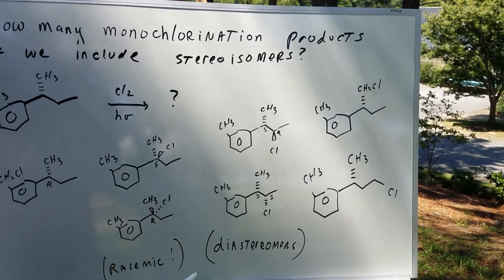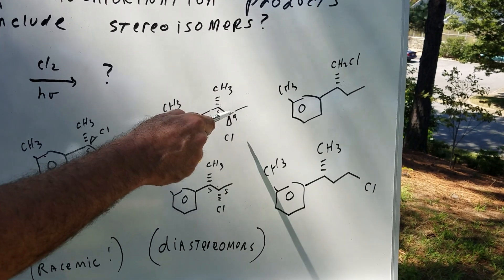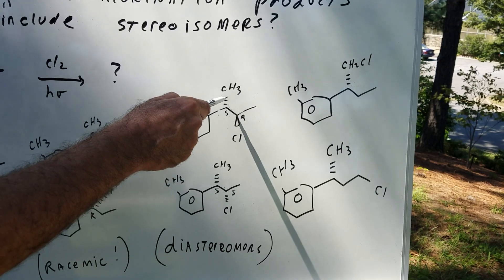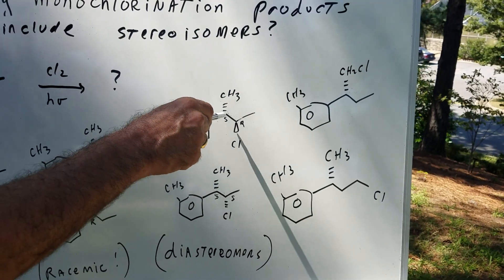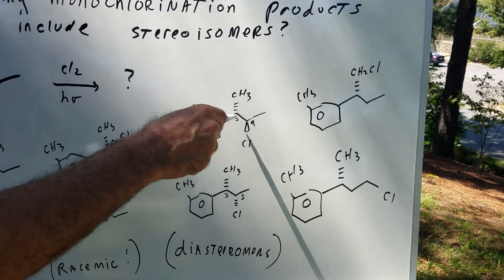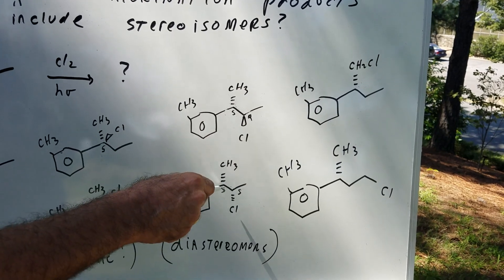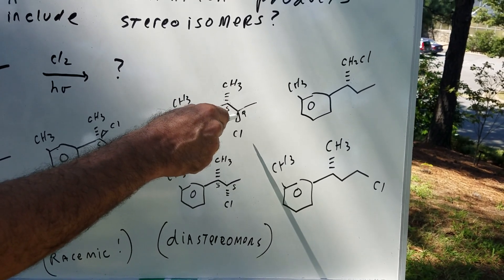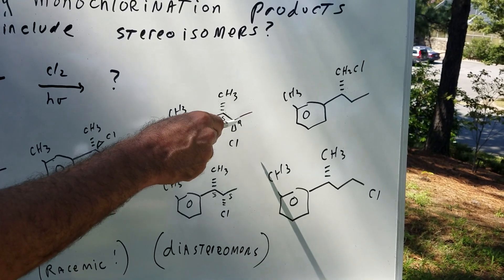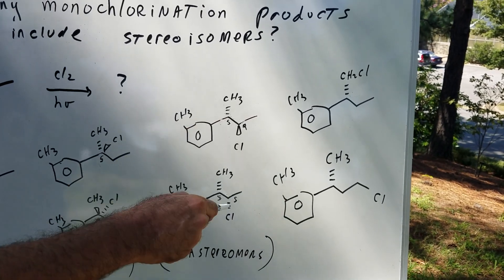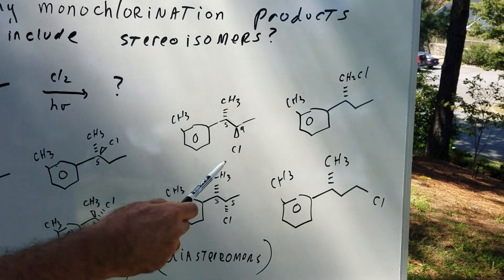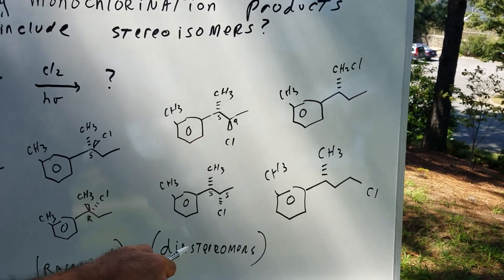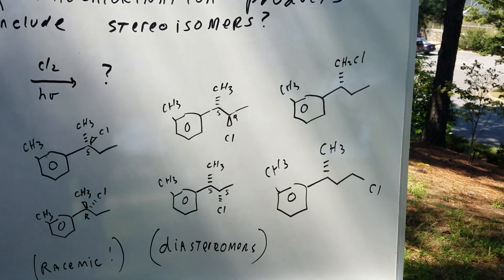Now we go to this one. If we replace the other hydrogen, which is in the secondary position, notice this stays as a dash — you're not touching this carbon, so leave it alone. And this is going to be an S; it's going to stay an S. And when you replace this H, you can have one chlorine come in to give the R or the S. If you compare these two, you have an SR and an SS — these would be a pair of diastereomers.